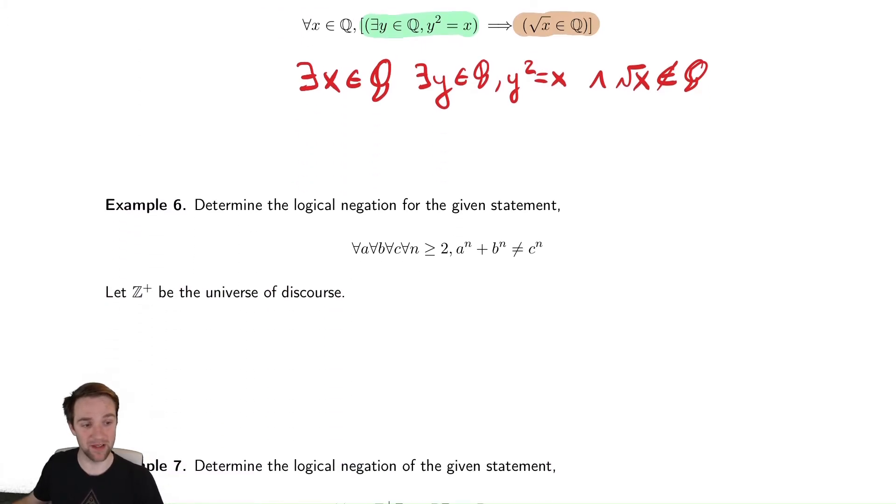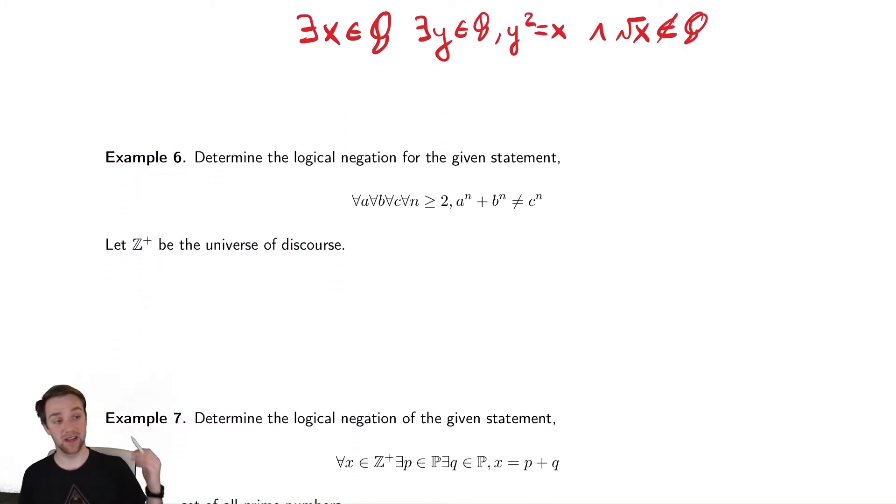Our next example is going to be Fermat's Last Theorem, which states it's going to be using universes of discourse, which allows us to be a bit lazier in our notation. It says for every a, b, c, and n greater than or equal to zero, this equation doesn't have a solution, which actually turns out to be true. It took us forever to prove this, hundreds and hundreds of years. Fermat is famous for having said that he has a proof of this theorem, but it was too big to fit in the margins of his book. The actual proof is hundreds of pages and involves several fields of mathematics that did not even exist at the time of writing that statement. So it's unlikely he actually had a proof of this. It was very famous. It was proved in the early 2000s, I believe, by Andrew Wiles. So it's a very famous theorem.